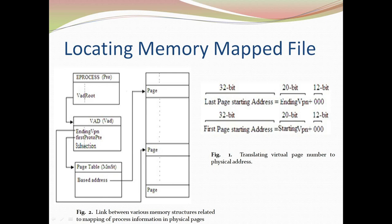From the VAD root we can visit individual VADs, each identified by the text signature 'VAT.' Each VAD has attributes including ending VPN (Virtual Page Number), first proto PTE, and subsection. The first proto PTE is an attribute that maintains the virtual address of the page table, identified by the signature 'MMST.' From the page table, at 24 bytes from the beginning, we find the base address.